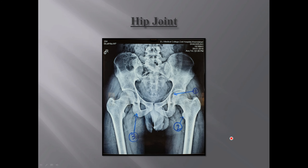Then we also have Shenton's line. It is a curved line formed in part by the upper margin of the obturator foramen and in part by the lower margin of the neck of the femur. What is the significance of Shenton's line? If in an X-ray we see that Shenton's line is broken or discontinuous, that means there is either displacement of the head of the femur, a fracture of the neck of the femur, or certain conditions such as Perthes' disease, which can cause a breakage or discontinuity of Shenton's line.